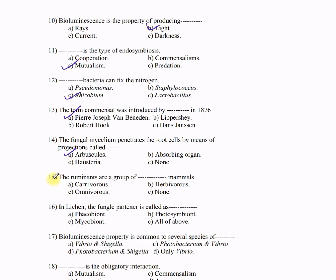Question 15: The ruminants are a group of dash mammals — A) carnivorous, B) herbivorous, C) omnivorous, D) none. This is the simplest of all the questions. The correct answer is B — herbivorous.